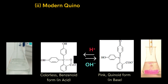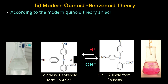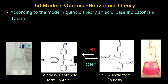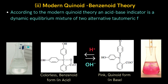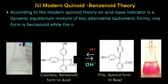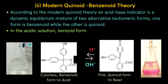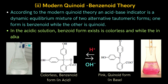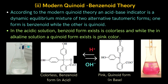The second theory to explain the color change of phenolphthalein in acidic and basic conditions is the modern quinoid and benzenoid theory. According to this theory, an acid-base indicator is a dynamic equilibrium mixture of two alternative tautomeric forms: one form is benzenoid while the other is quinoid. In acidic solution, the benzenoid form exists as colorless, while in alkaline solution the quinoid form exists as pink color.